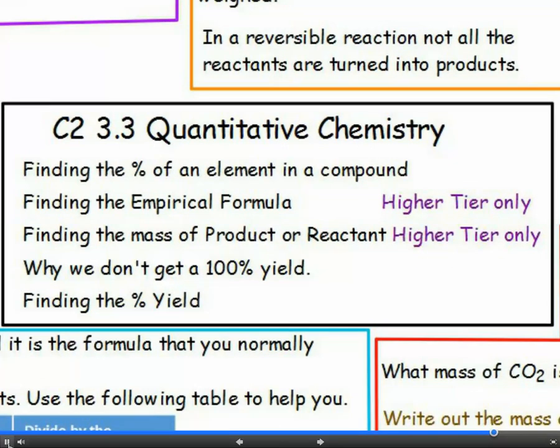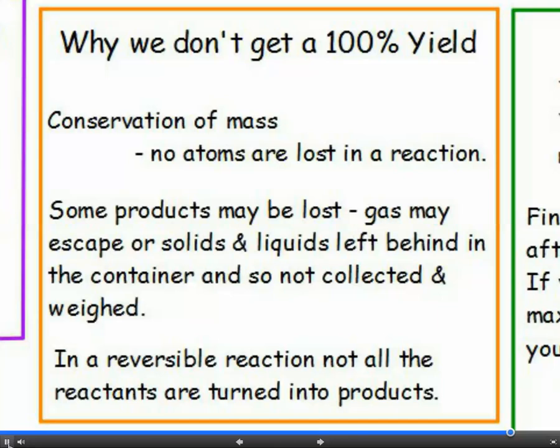Yield, and why it isn't always 100%. Bit like your exam results. No atoms are destroyed or made, so why don't we get all the product we're supposed to get?